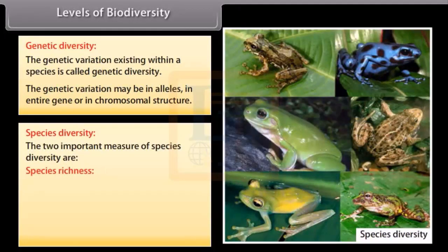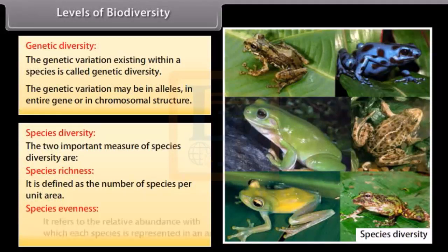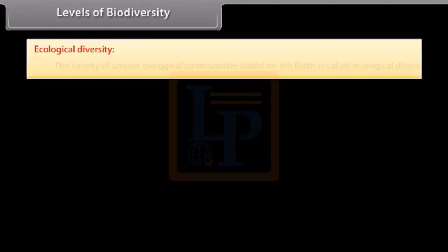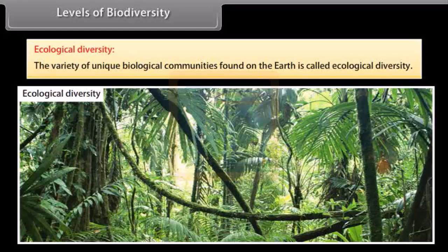Species richness is defined as the number of species per unit area. Species evenness refers to the relative abundance with which each species is represented in an area. Ecological diversity: the variety of unique biological communities found on the earth is called ecological diversity.